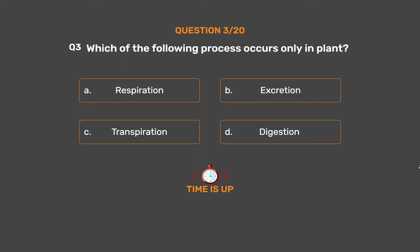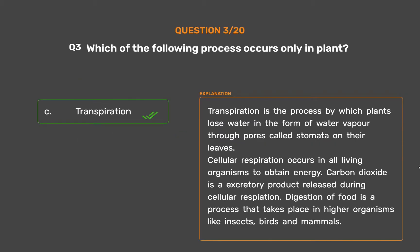The correct answer is Option C: Transpiration. Transpiration is the process by which plants lose water in the form of water vapor through pores called stomata on their leaves. Cellular respiration occurs in all living organisms to obtain energy. Carbon dioxide is an excretory product released during cellular respiration. Digestion of food is a process that takes place in higher organisms like insects, birds, and mammals.